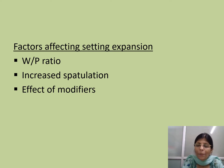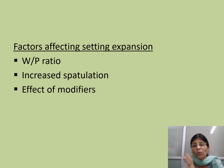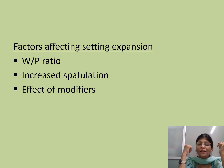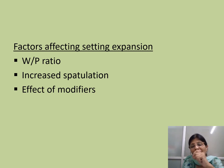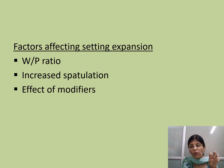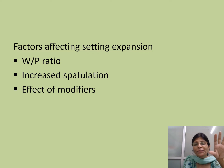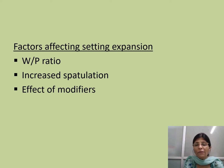The next factor is increased spatulation. Within practical limits, if you rapidly mix the material, you are breaking one nucleus into many nuclei, so the number of nuclei of crystallization increases. More nuclei means more pushing of the particles, and setting expansion is more. Each particle breaks into, say, 15 particles, each acting individually as a spherulite — so faster and greater pushing is seen, resulting in increased setting expansion.